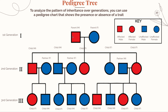In this example, our male parent and female parent have come together to have children, and we're also keeping track of some of their children. The male parent is affected by the trait while the female parent is not. Their first male child is affected by the trait, the second male child is not.